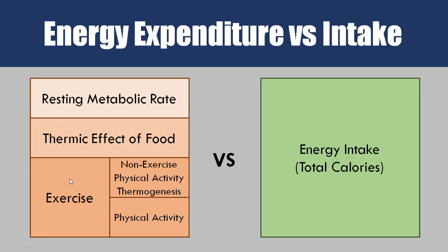Then we have exercise, which is another big component. There are two different forms: non-exercise physical activity thermogenesis, also referred to as NEAT, which is basically any movements like fidgeting or moving around that aren't planned physical activity; and then actual physical activity — running, lifting weights, or any exercise we can think of. All those things combined have to be more than our energy intake for us to lose weight.